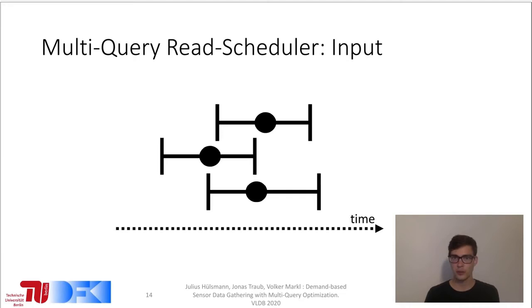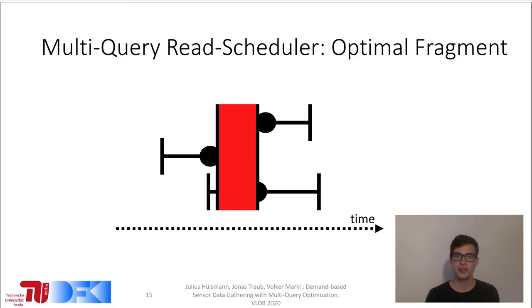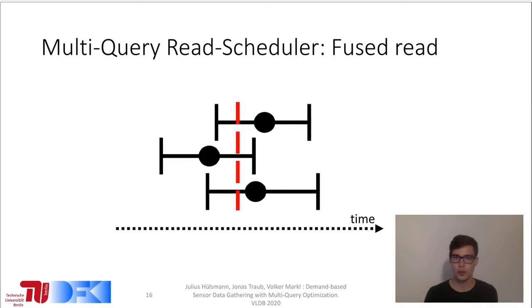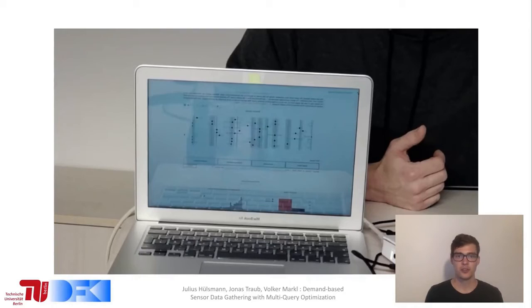The multi-query read scheduler uses the user-defined sampling functions of all deployed queries. It first computes a time interval, which we call the optimal fragment. It then minimizes the penalty function on that interval, yielding the next read time, which serves a subset of all deployed queries best. When the next read time is due, the sensor wakes up, issues a read, and transmits that value to the clients which issued the involved queries.